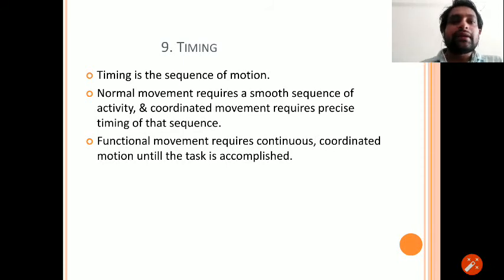Next is timing. Timing, that means the sequencing of movement, the sequence of motions. Normal movement requires a smooth sequence of activity, and coordinated movement requires precise timing of that sequence. Functional movement requires continuous coordinated motions until the task is accomplished. By timing, therapists should use the sequence of motion, and by that, therapists should use the stronger muscles to strengthen the weaker muscles by irradiation, by the transfer of energy from stronger muscles to weaker muscles.